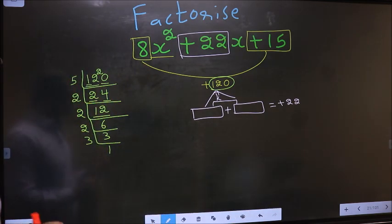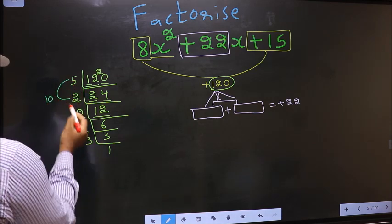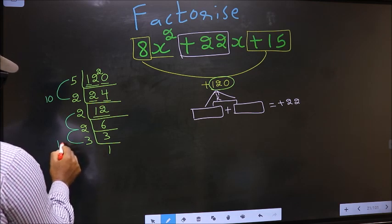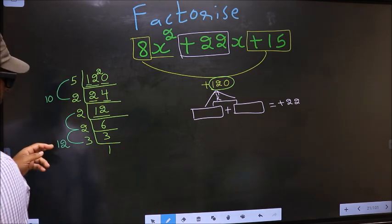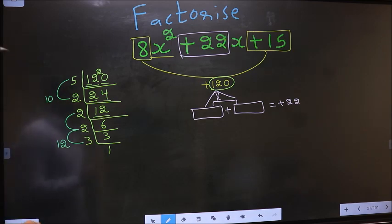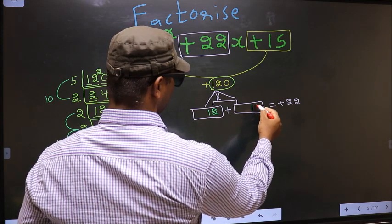Now, the 2 numbers should be 5 into 2, which is 10, and the second number is 2 into 2 into 3, which is 12. 10 plus 12 is 22, 10 into 12 is 120. So here we write 12 and here we write 10.